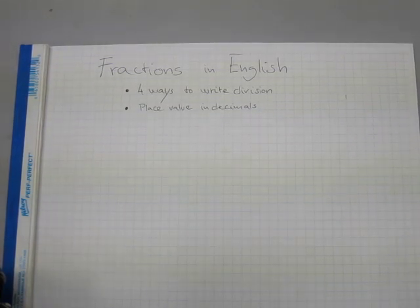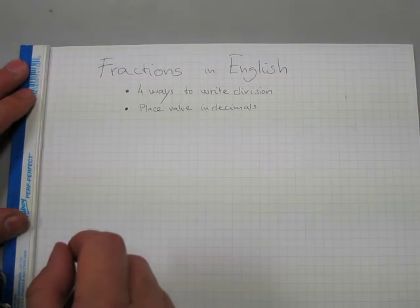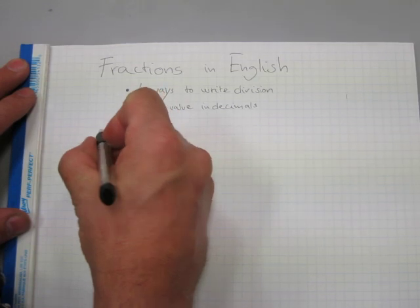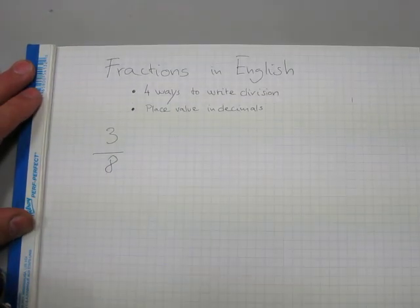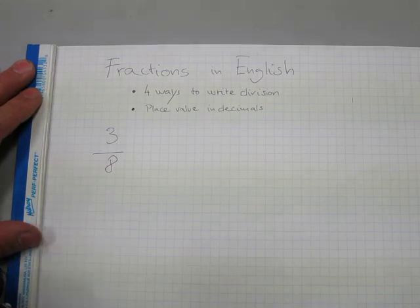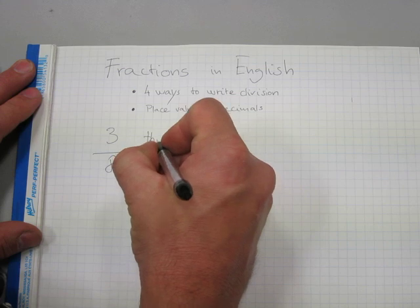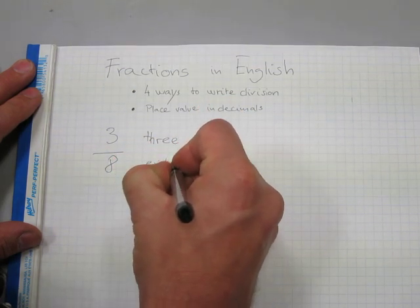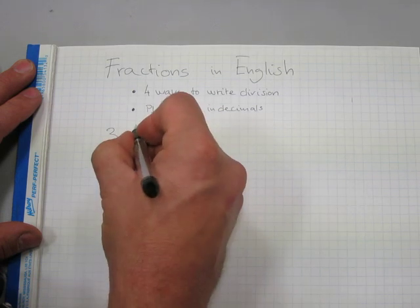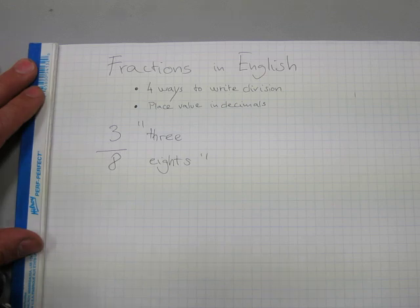Writing fractions in English is fairly straightforward. For example, there's a fraction 3 eighths. This is how you write fractions in English typically — you say the words '3 eighths.' That's what you say: 3 eighths for this fraction.